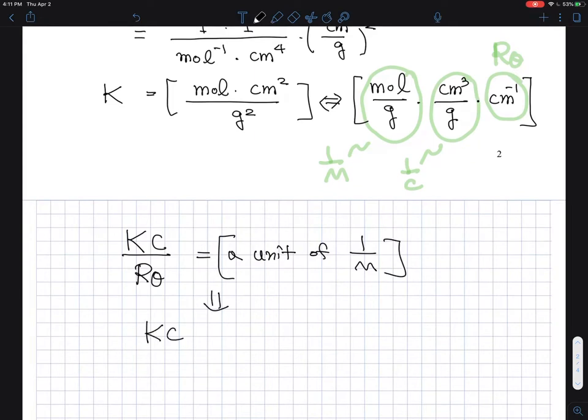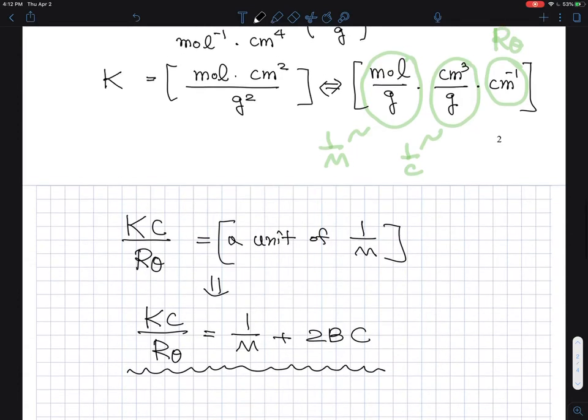And finally, that optical constant times C divide by R_theta should have a unit of one over molecular weight. So that's one way to look at this. And Rayleigh ratio, optical constant, and concentration of polymer solution turns out to be used in a form of a Debye equation that we can use for the light scattering experiment. Thank you.